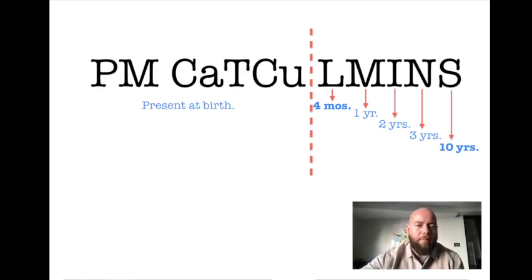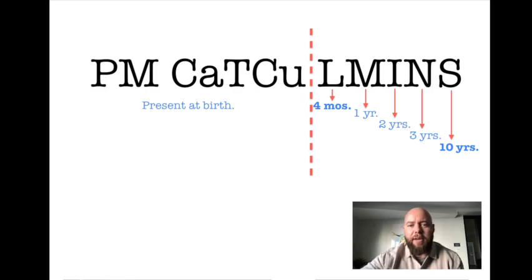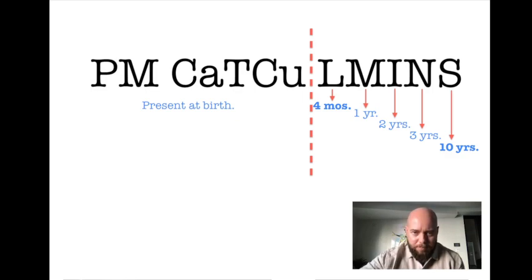P is for phalanges, M is for metatarsal, CA is for calcaneus, T is for talus, CU is for cuboid, L is for lateral cuneiform, M is for medial cuneiform, I is for intermediate cuneiform, N is for navicular, and S is for sesamoids.